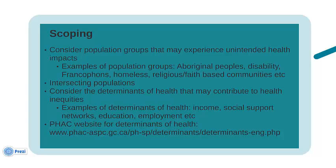The second part of scoping is to identify the determinants of health. In other words, what are the underlying factors that may be influencing the health of the population groups? Examples of determinants of health include income, social support networks, education, employment, etc. You can find a more detailed list of determinants of health at the Public Health Agency of Canada website that is shown here.